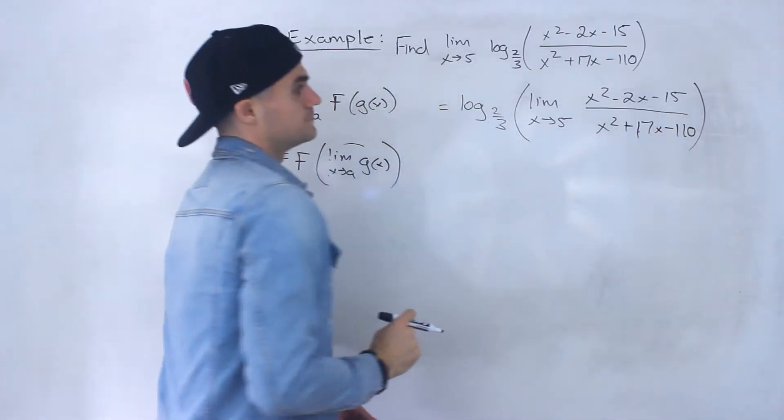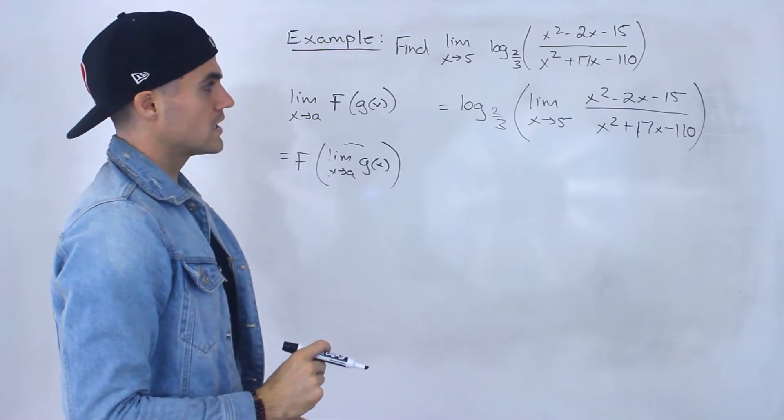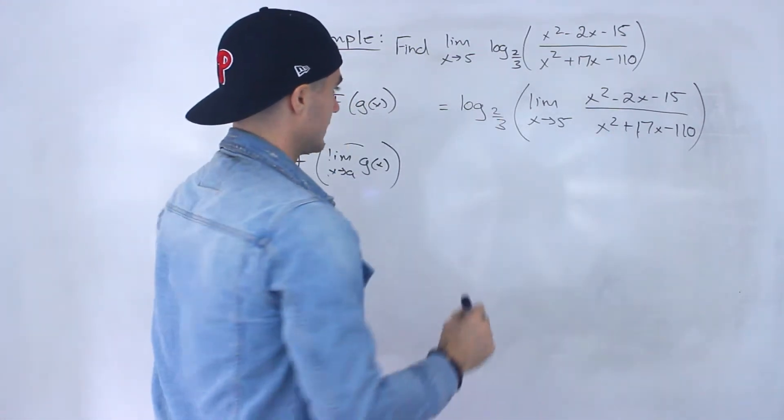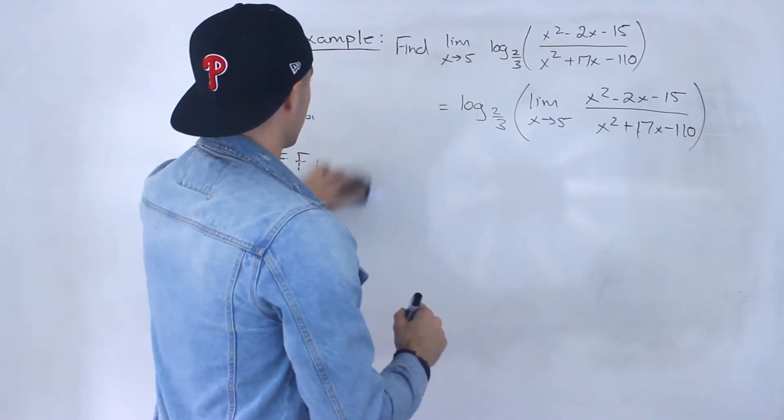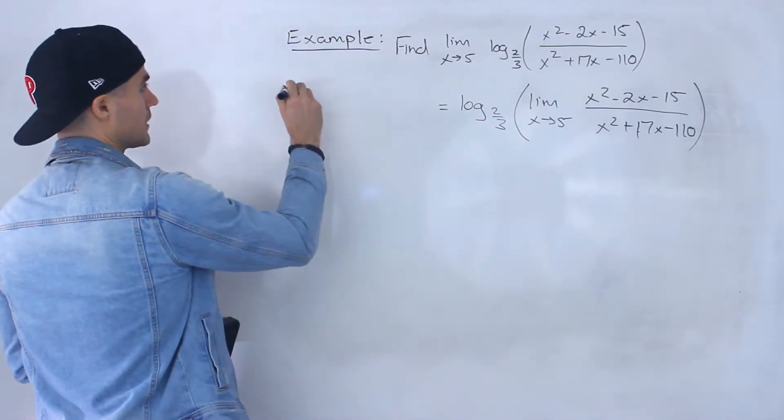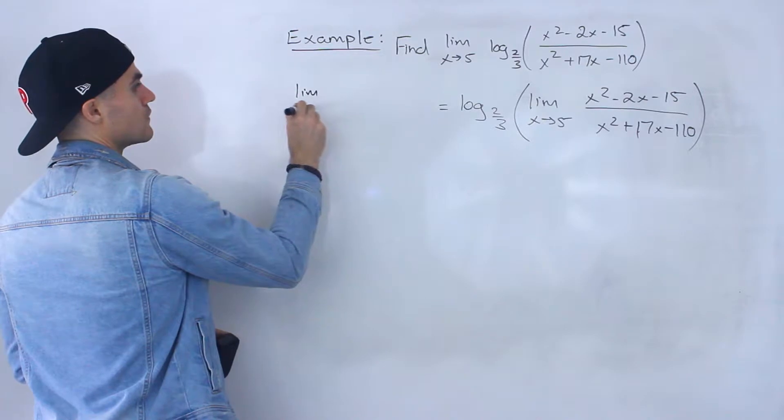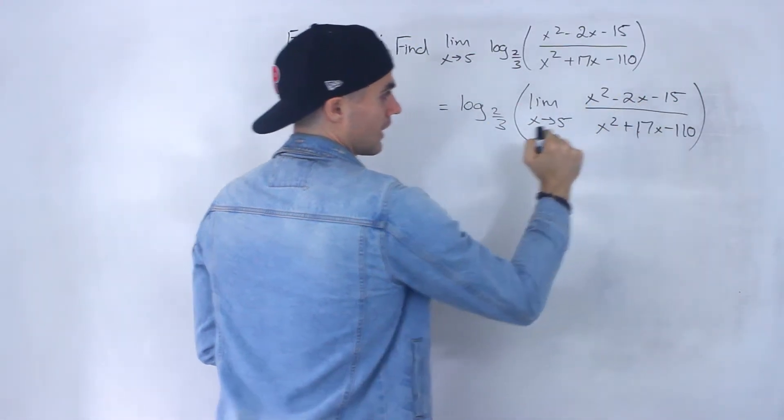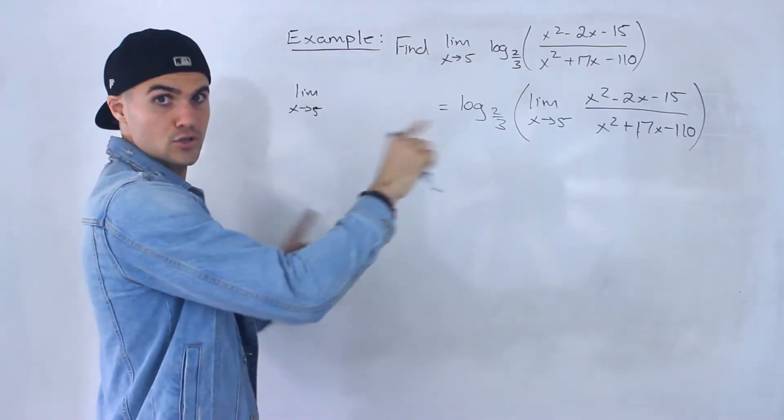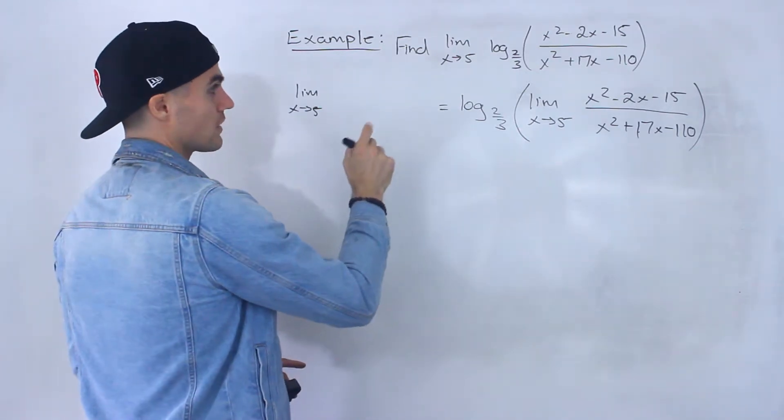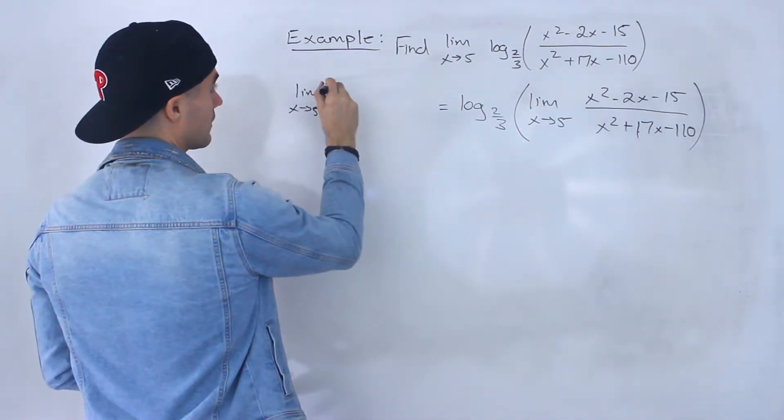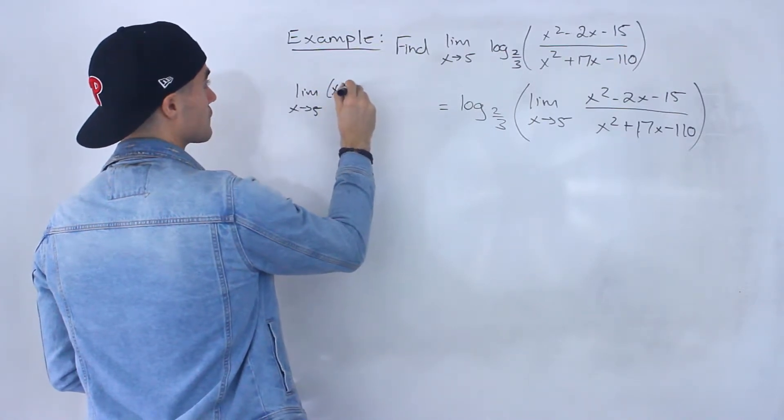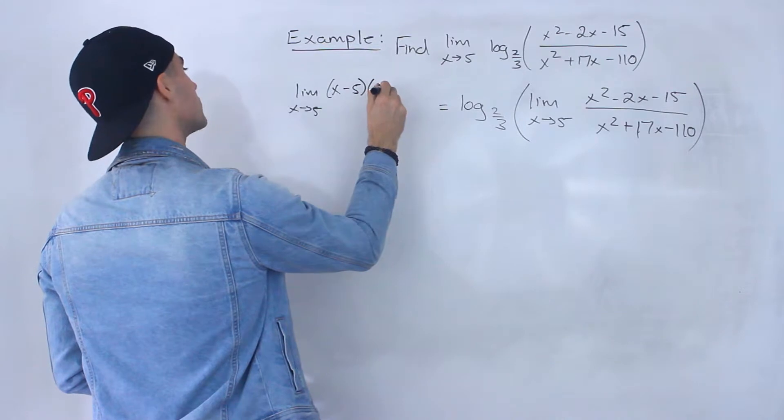So at this point here, we still can't do a direct substitution. But now we got this limit that we could work with on the side here, the limit as x approaches 5 of this function here. And so what I'm going to do is I'm actually going to factor the numerator and denominator. So if I factor the numerator, that would be x minus 5, x plus 3.